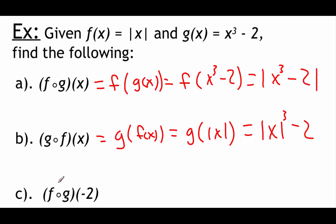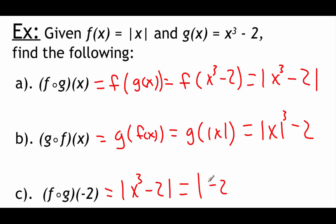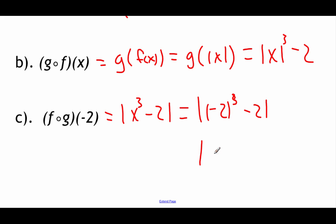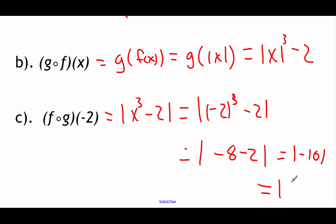For the next part, we're back to f of g, but instead of leaving x as a variable, we're going to plug in −2. Earlier when we did f composed with g, we ended up with |x³ − 2|. Now we replace x with −2, giving us |(-2)³ − 2|. Negative 2 cubed is −8, so we have |−8 − 2| = |−10|. Absolute value makes it positive, so our answer is 10.